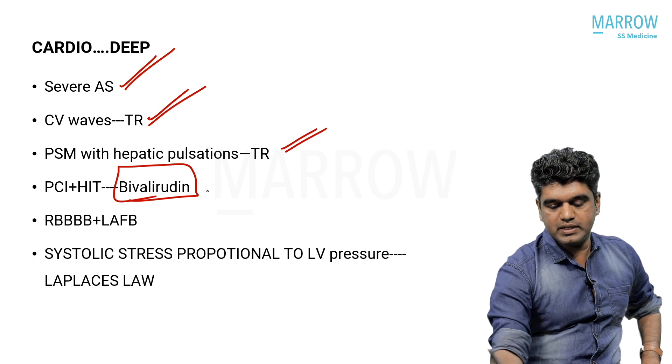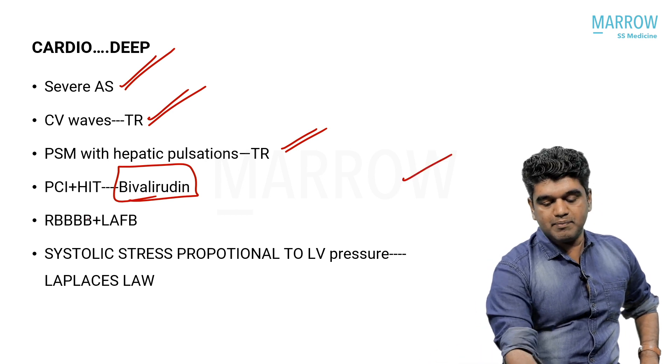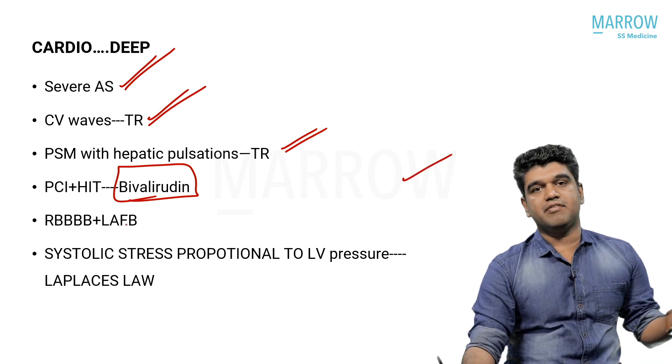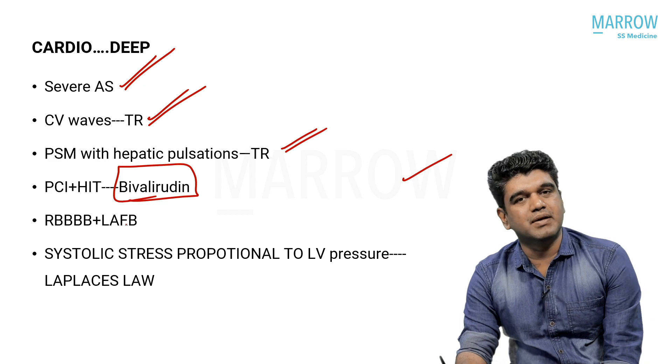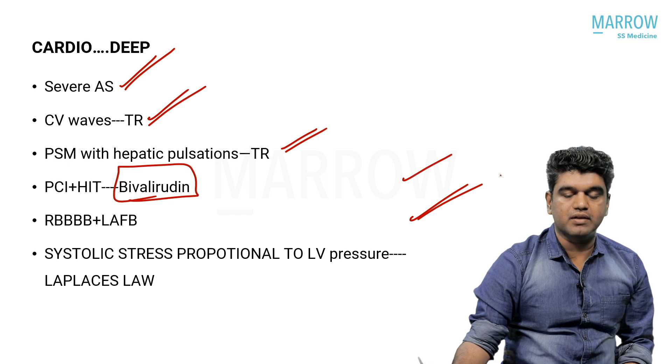In a PCI patient with HIT, argatroban is the drug of choice, but in PCI specifically it is bivalirudin — very important distinction requiring cardiologist knowledge. RBBB with left fascicular block on ECG — whenever you have RBBB, check for left axis deviation or right axis deviation. Left axis deviation means left anterior fascicle is involved, which is called bifascicular block. With prolonged PR interval, you think of trifascicular block — Nishan explains this in great detail.